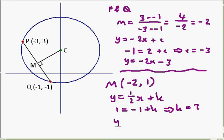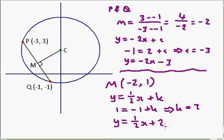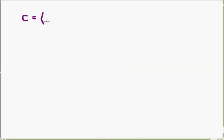So, the perpendicular bisector MC is Y equals 1 half X plus 2. So, in other words, what I can straight away see is that the coordinates of C, if I put in X is 0 into this, so Y is 2, so the coordinates of the centre is 0, 2.